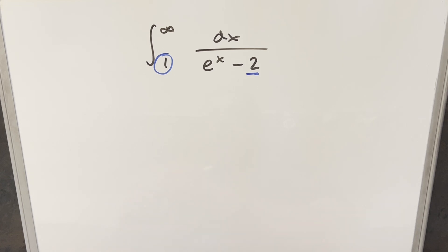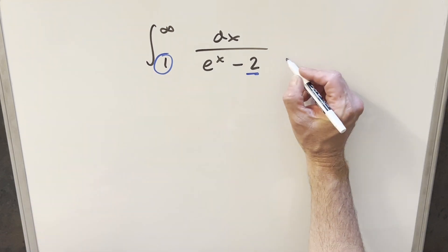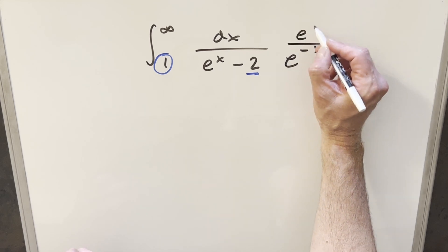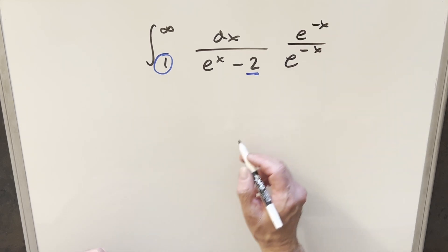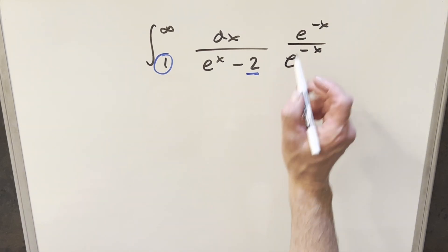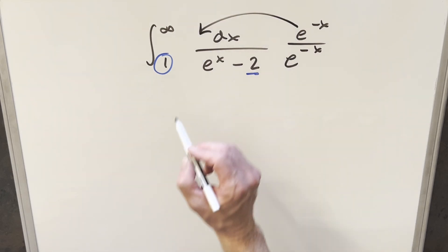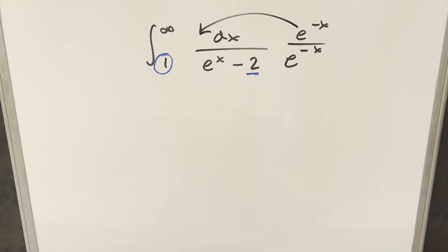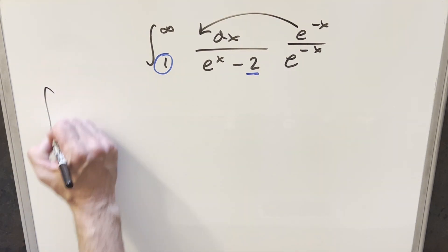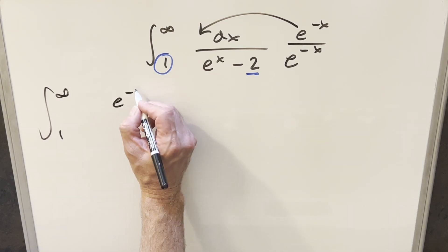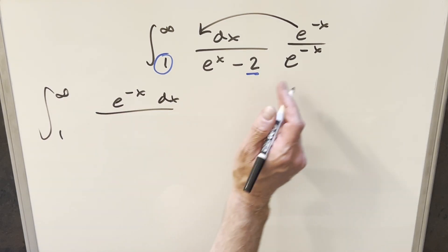What I'm going to do is treat this for now like the indefinite integral. What I want to do is multiply in here by 1 — specifically e to the minus x over e to the minus x — so that when we multiply this in, it's going to give me something in the numerator in order to do a u-substitution. When we do this, multiplying it all together, we just have e to the minus x dx in the numerator.